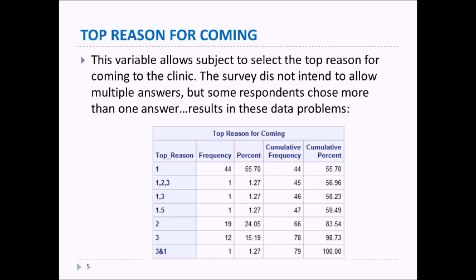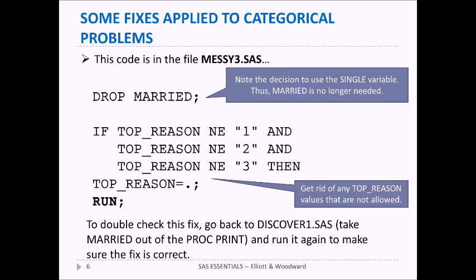These variables, these numbers have to be dealt with because they would make it hard to analyze. So let's look at a couple of ways we might fix this. It's in the file called messy3.sas. First of all we're going to drop the married variable. The researcher decided that the single variable is the appropriate one to use.